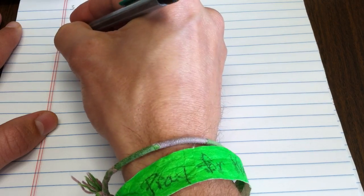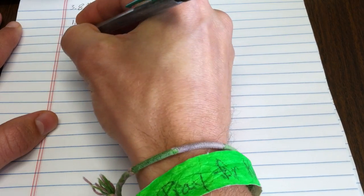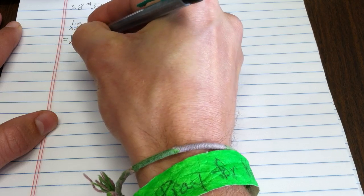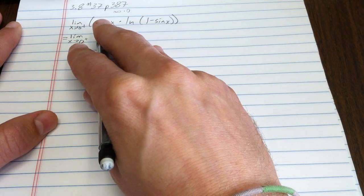So that's an indeterminate form that we can convert if we divide by one of those pieces. Well, what's convenient to divide by? I suppose if I divided by...